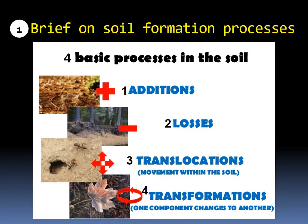In the previous lecture we saw that during the development of soil horizons, there were things that were added, others might be lost from the soil, other things might be translocated or moved within the soil, while others were transformed from one form to another. These four different things are called the soil formation processes. Now let's start each one of them individually.